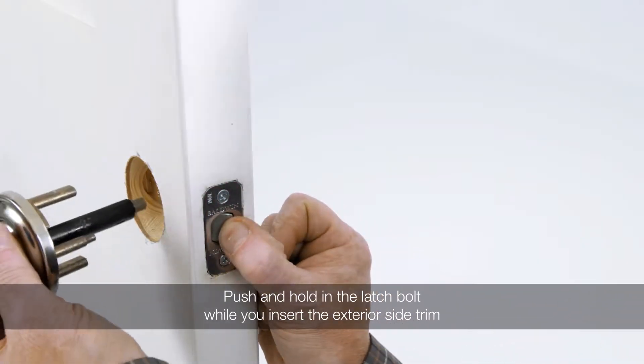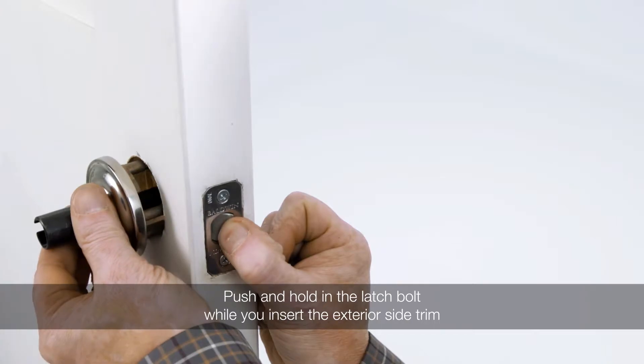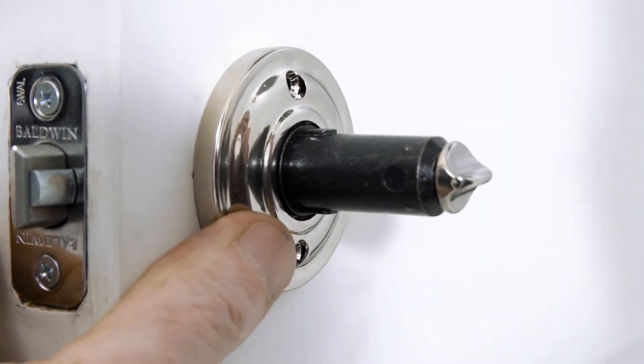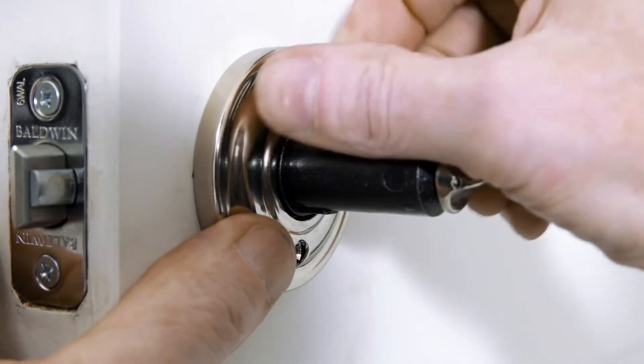Push and hold in the latch bolt while you insert the exterior side trim. Slide the interior trim on and fasten with the two screws provided.